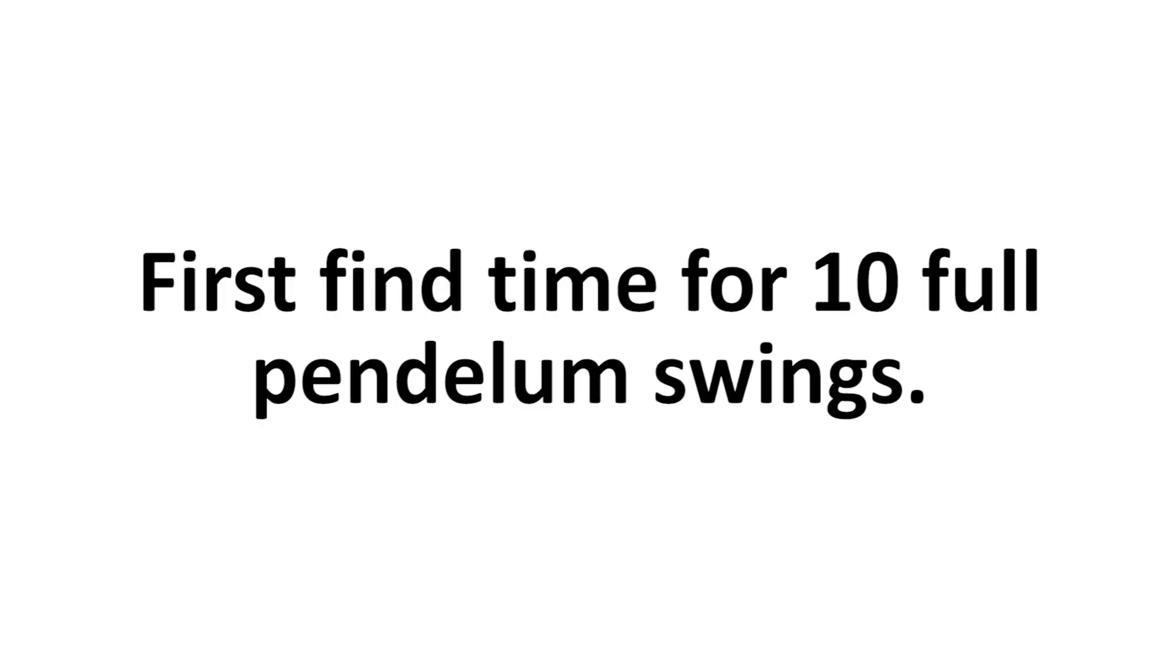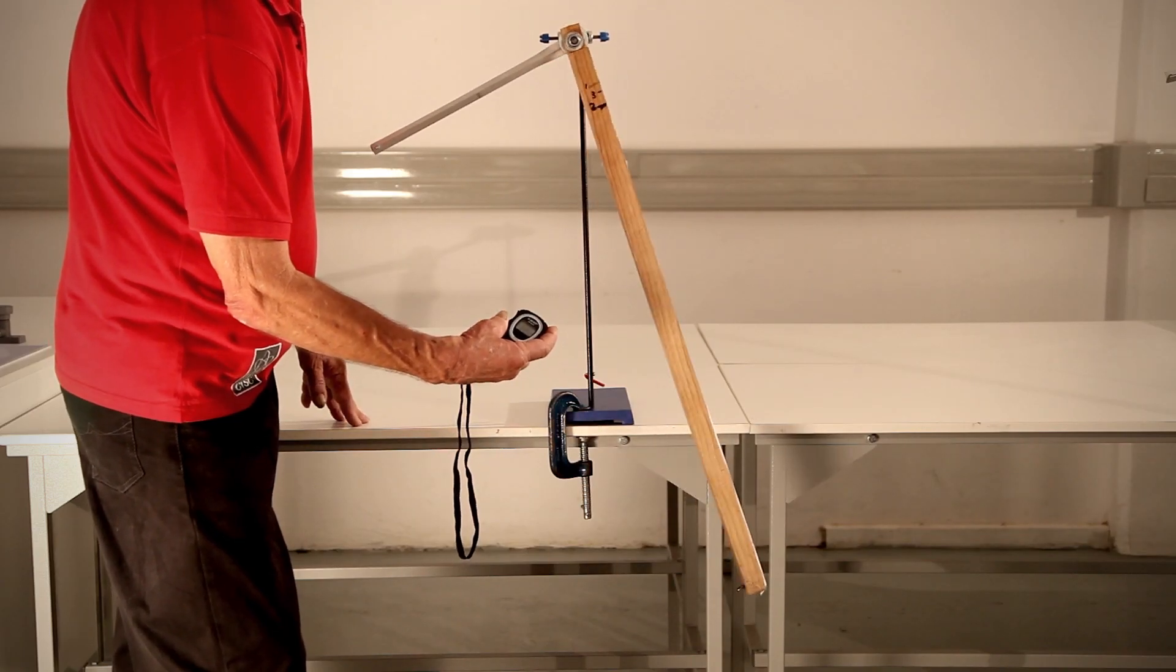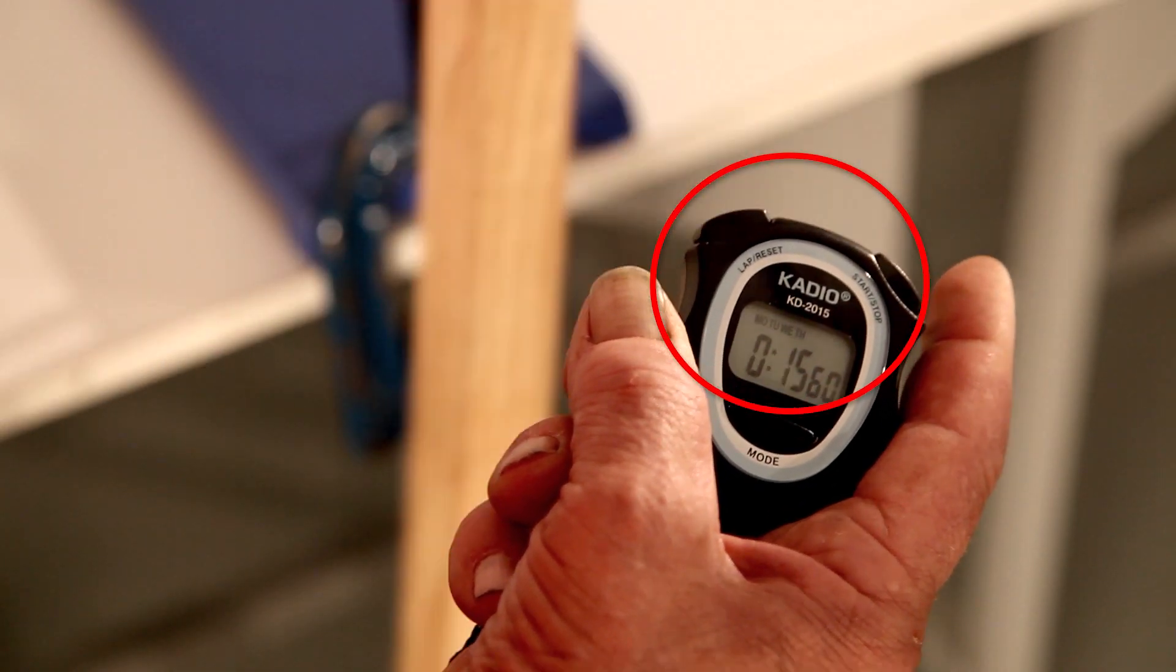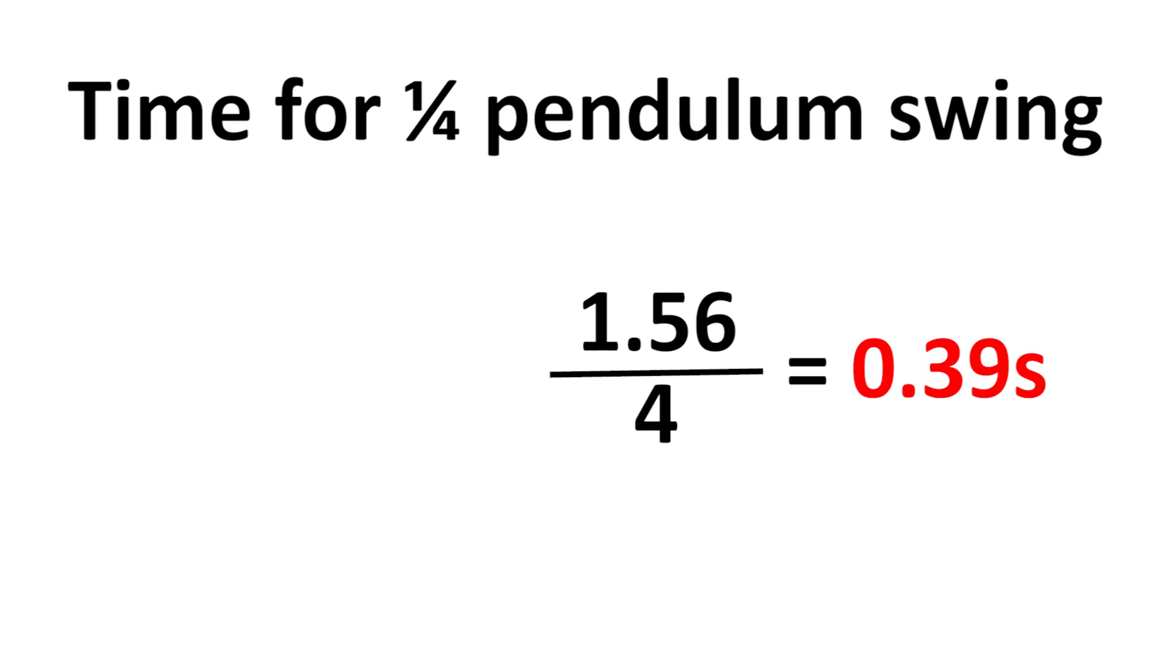To find the time of a quarter of a swing of the pendulum, we must first find the time for 10 complete swings. This time is divided by 10 to find the time for one complete swing. This time in turn is divided by 4 to determine the time for a quarter of a swing of the pendulum.